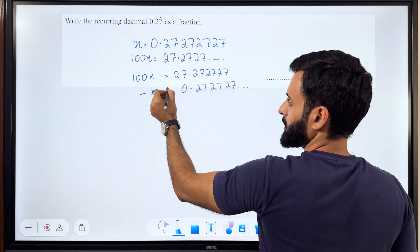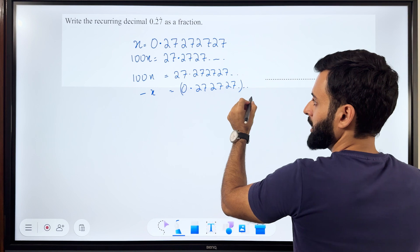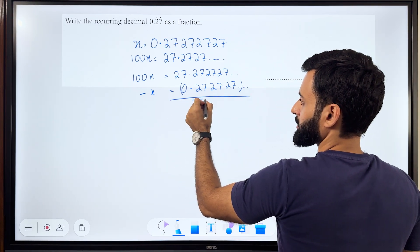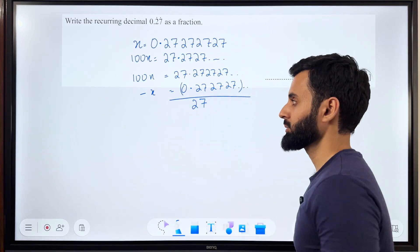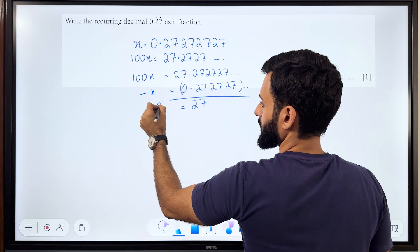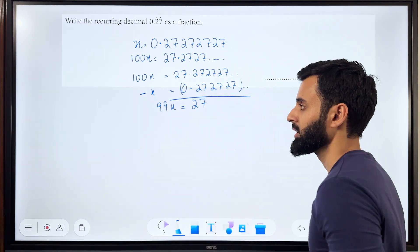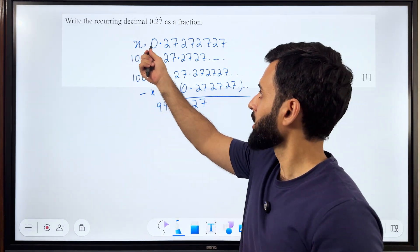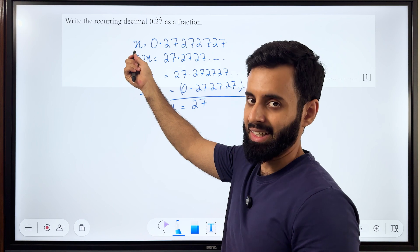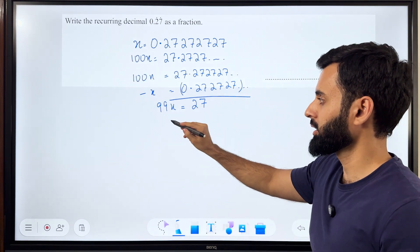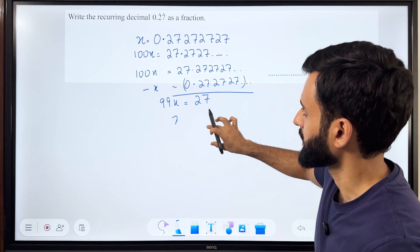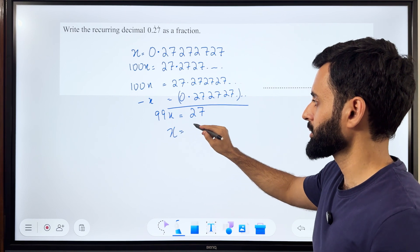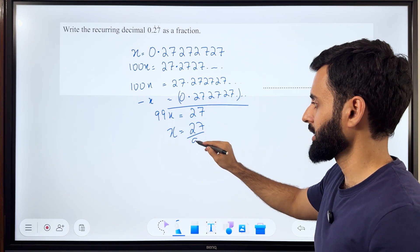If I subtract the two, I will be simply left with 27. What is that equal to in terms of x? That is basically equal to 99x. Remember, you just want the fraction value of this decimal which is technically equal to x. All you got to do is make x the subject. Oops, that was not supposed to happen. So x equals 27 over 99.